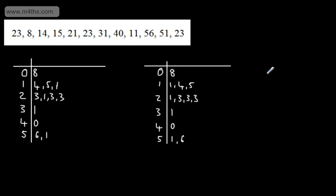To complete the stem and leaf, I need a key. And we can choose any of these values for our key. I'm going to choose this one here. And we can say that the key 3, 1 is equal to 31.